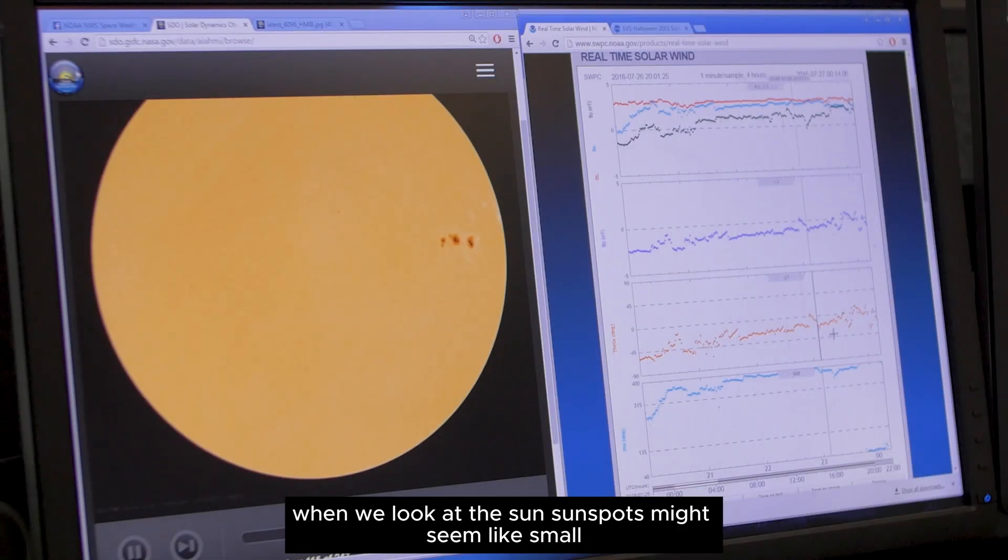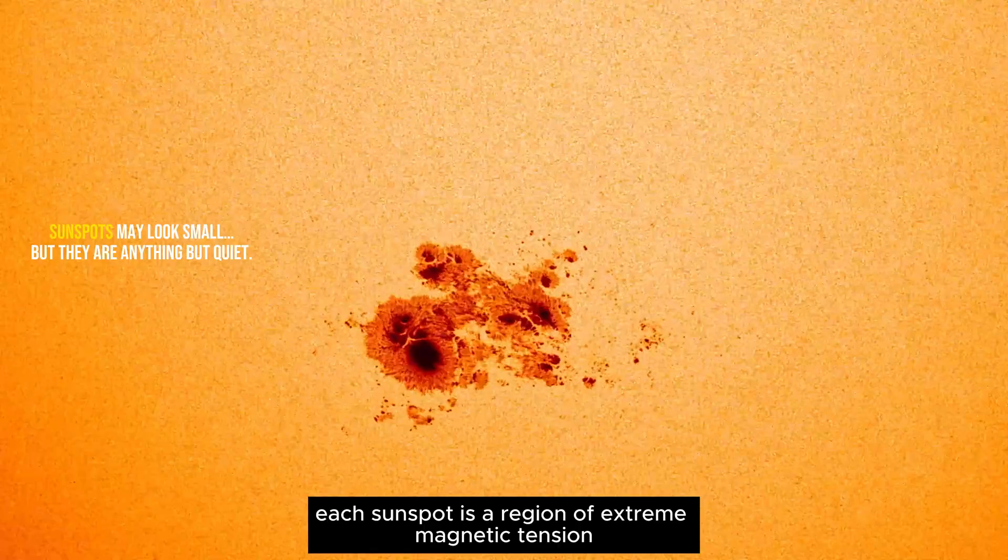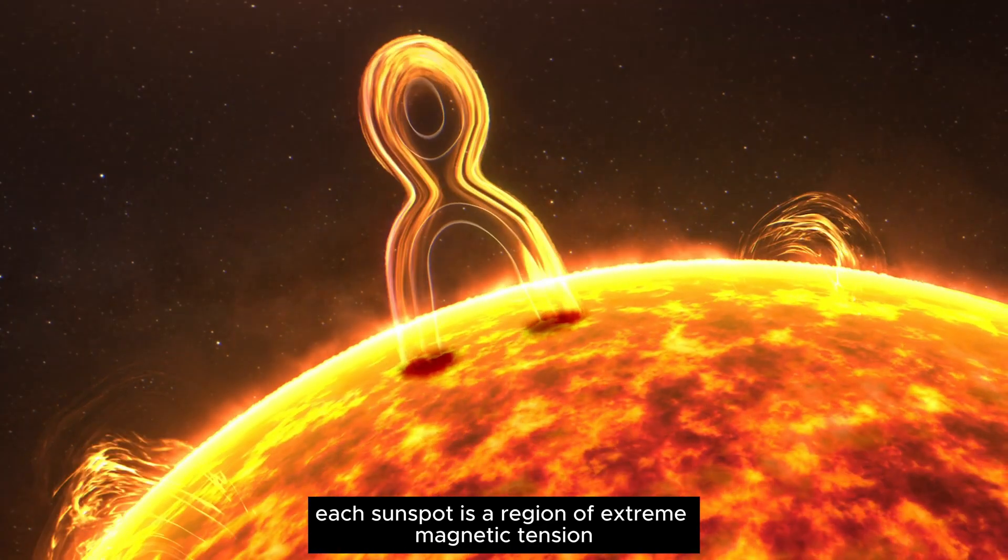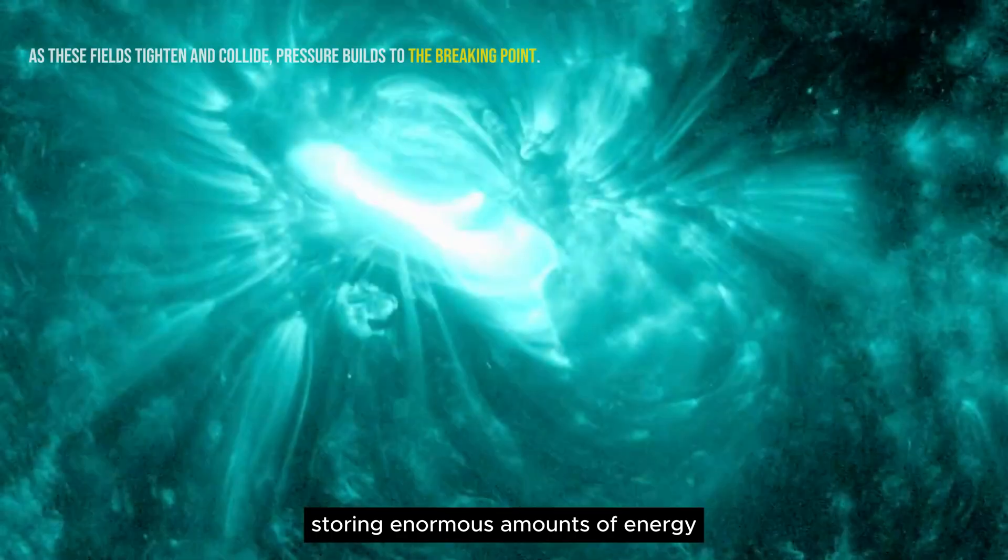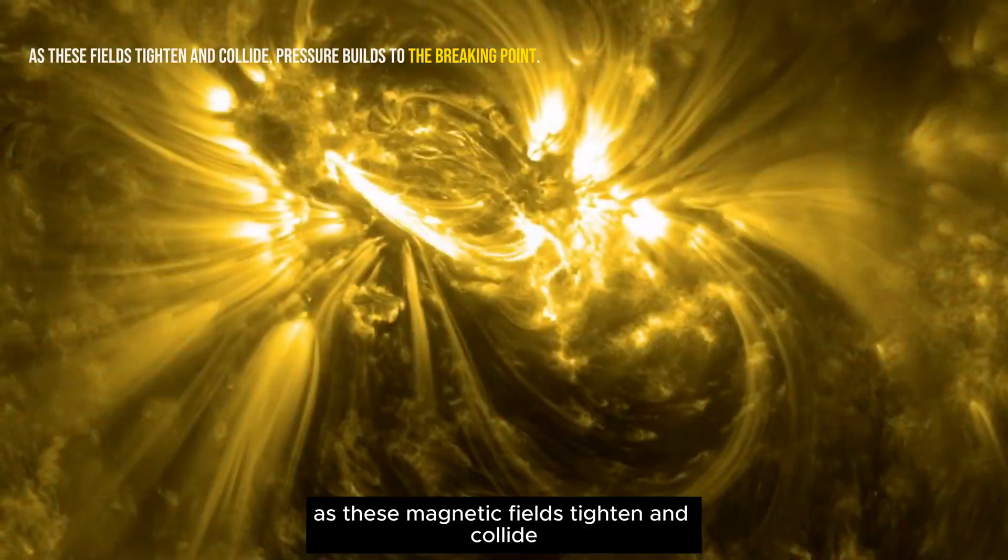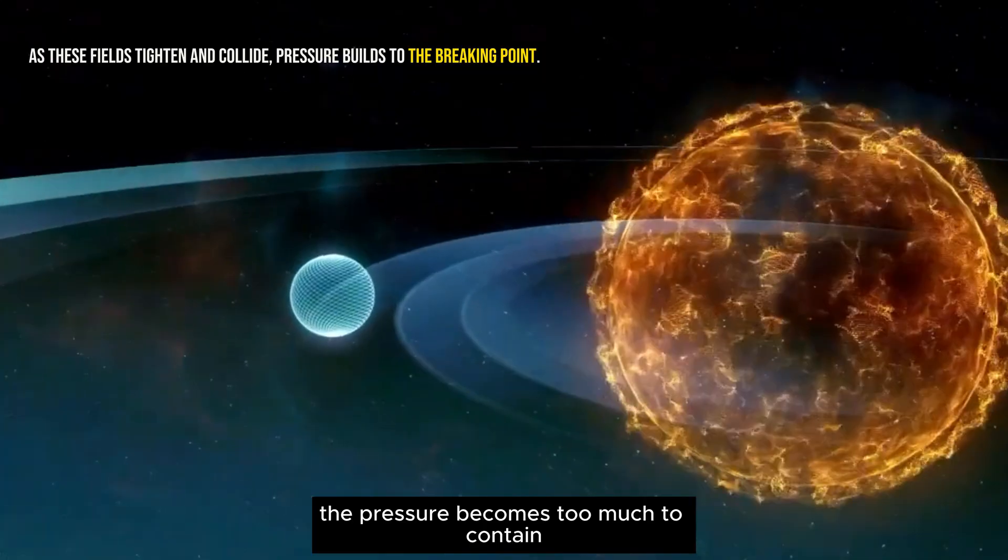When we look at the sun, sunspots might seem like small, dark patches, but they're anything but quiet. Each sunspot is a region of extreme magnetic tension, like twisted rubber bands storing enormous amounts of energy. As these magnetic fields tighten and collide, the pressure becomes too much to contain.